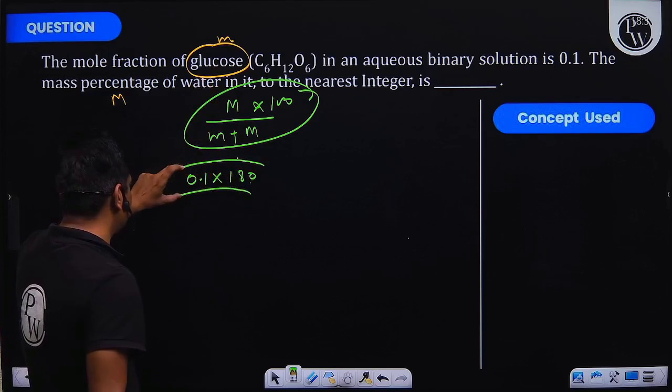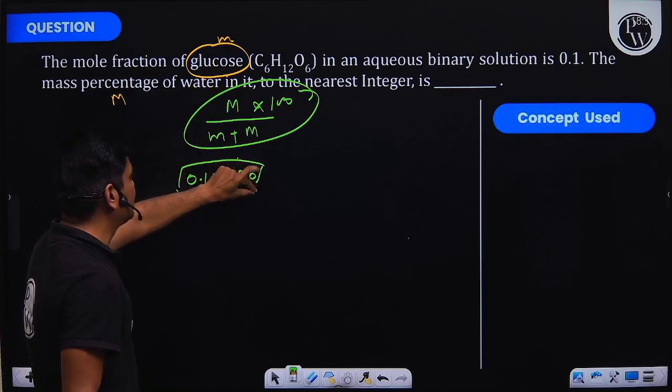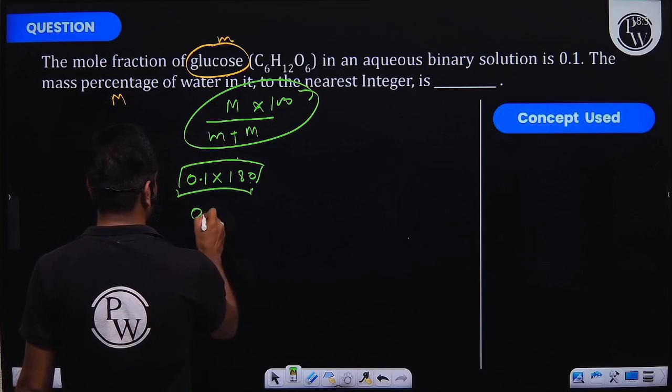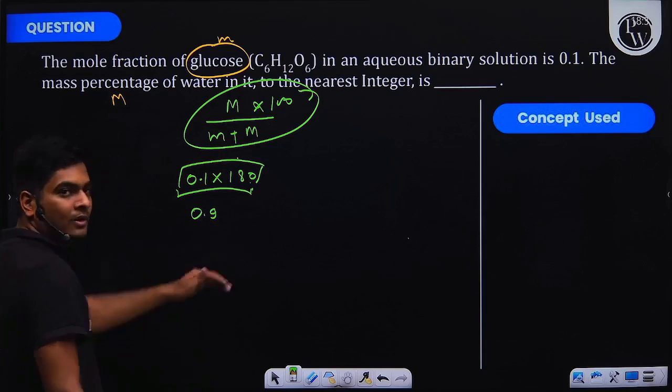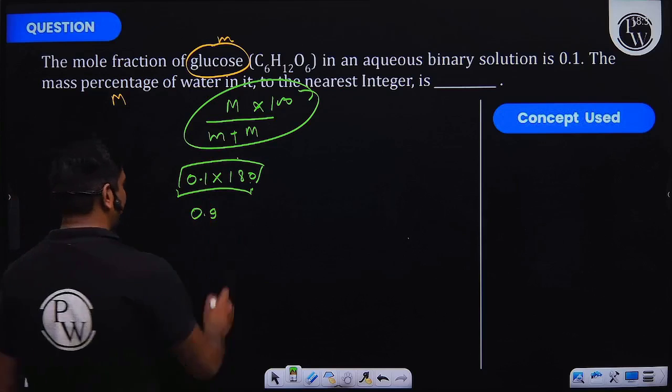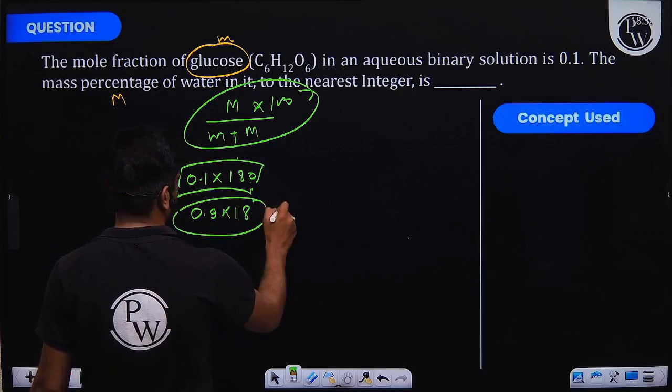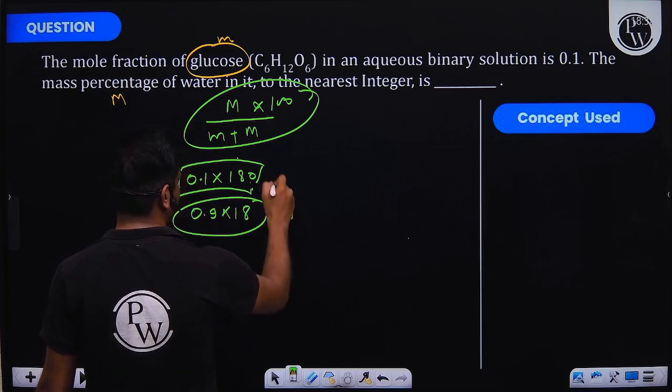And what would be the mass of water? 0.9, because 0.9 is the moles of water in solution, and when we multiply it by 18, which is the molar mass of water, this would give us capital M. This would give us small m, and we can find the value of this expression.